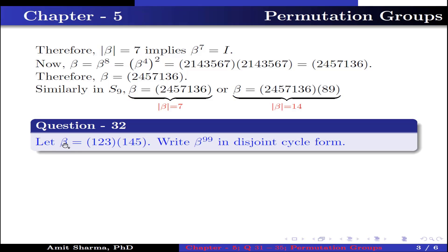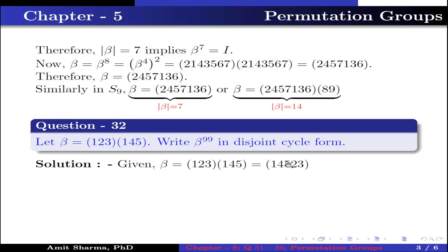Question number 32: Let beta be the product of permutations (1, 2, 3) and (1, 4, 5). Write beta^99 in disjoint cycle form. Multiplying these two permutations: 1 maps to 4, 4 maps to 5, 5 maps to 2, 2 maps to 3, and 3 maps to 1 — the cycle is complete. This implies the order of beta is 5, because it is a 5-cycle permutation.